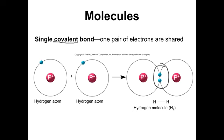These two hydrogen atoms are going to share their electrons. The electrons will now be orbiting both atoms — this one now has two electrons orbiting it, and this one has those same two electrons orbiting it. That's what's called a covalent bond: it is a pair of shared electrons. A single bond is two shared electrons; if you have four shared electrons, that is a double bond. The fact that these electrons are now orbiting both nuclei holds the nuclei together.